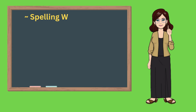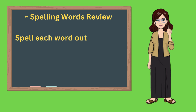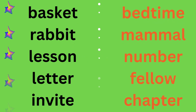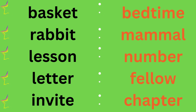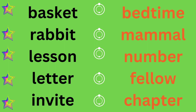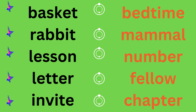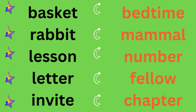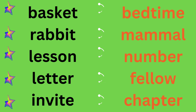Spelling review. Spell each word out with me. We will spell each word in the black column, then the orange column, then the blue column, then the red column. Get ready, let's spell. Black column: Basket, B-A-S-K-E-T, basket. Rabbit, R-A-B-B-I-T, rabbit. Lesson, L-E-S-S-O-N, lesson. Letter, L-E-T-T-E-R, letter. Invite, I-N-V-I-T-E, invite.